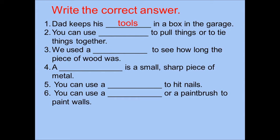Number two: You can use blank to pull things or tie things together. What is the correct answer? The correct answer is rope. Please follow teacher: You can use rope to pull things or tie things together.